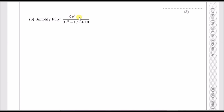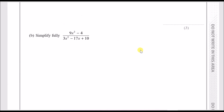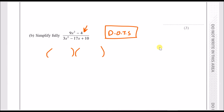For part b, we have a quadratic expression that looks like a difference of two squares on top over a regular quadratic with a leading coefficient of 3. When you see a quadratic with no x in the middle, it's likely a difference of two squares. Factorize it using double brackets: the square root of 9x squared is 3x, the square root of 4 is 2, giving (3x plus 2)(3x minus 2).